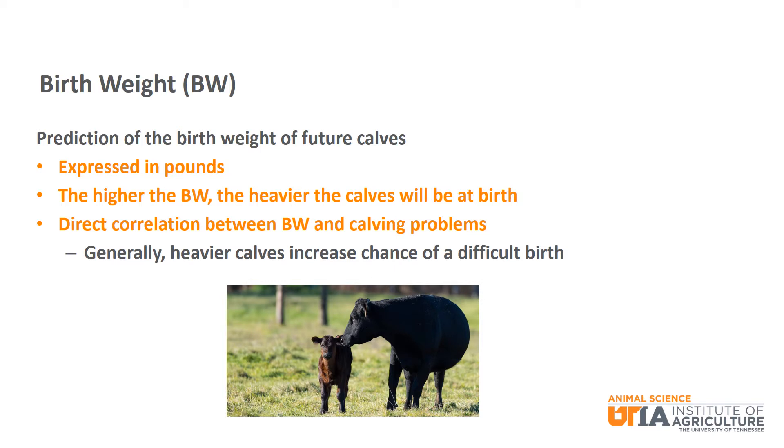The first is birth weight. It is a prediction of the birth weight of future calves and is expressed in pounds. The higher the birth weight, the heavier the calves will be at birth. There is a direct positive correlation between birth weight and dystocia or calving problems. Generally, heavier calves at birth will increase the chance of a difficult birth.